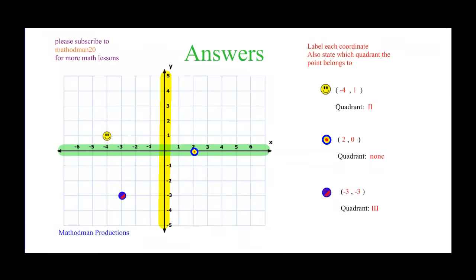Here are the answers. First part, the smiley face is (-4, 1). Start in the center, negative four, up one. It's in quadrant two. Second point is right here by the target. It's at (2, 0). And it was a tricky one. There's no quadrant because it's in the middle of quadrant one and four. If it's on the x-axis, it doesn't belong in any quadrant. And the last one is (-3, -3). That is in quadrant three.